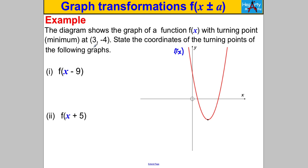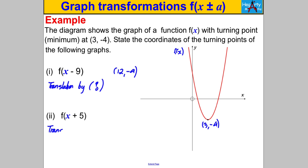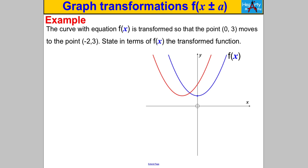Let's try another one — pause the video and have a go. We're given the graph f(x) with a minimum at (3, -4), and asked to state the coordinates of the turning points of: f(x-9) — that's a translation by (9, 0), so the point moves from (3, -4) to (12, -4). And f(x+5) — that's a translation by (-5, 0), so the x coordinate moves left by 5, giving (-2, -4).